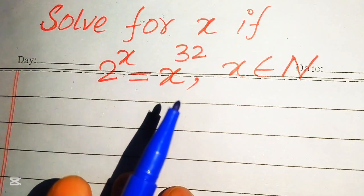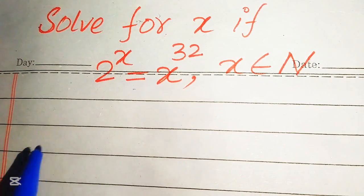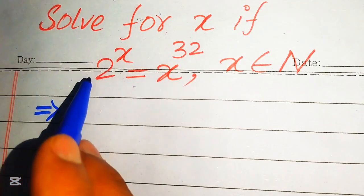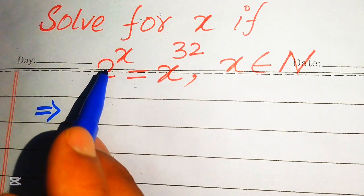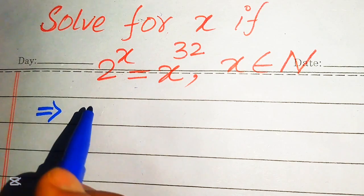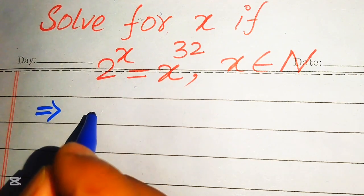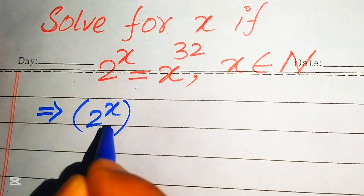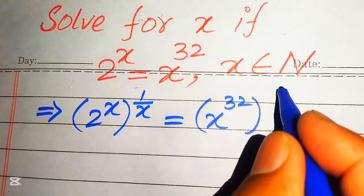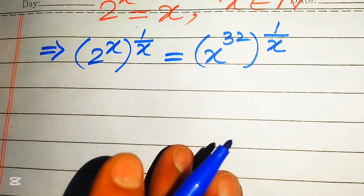The very first thing we are going to do is move all the variable terms to the left hand side and all the constant terms to the right hand side. To do this, we need to move x to the right hand side by taking the xth root, or 1 over x power, on both sides. So we write 2 to the power of x, whole raised to 1 over x, equals x to the power of 32, whole raised to 1 over x.